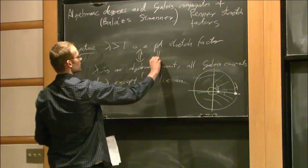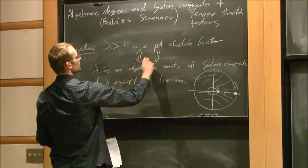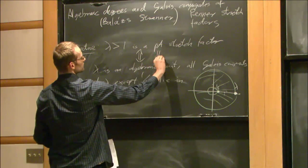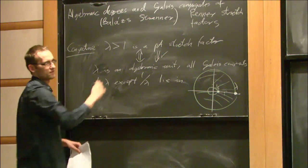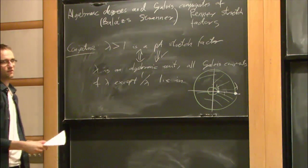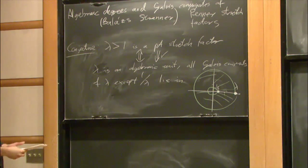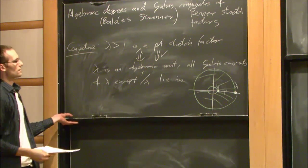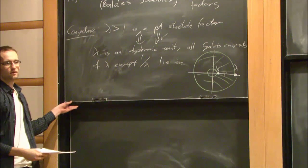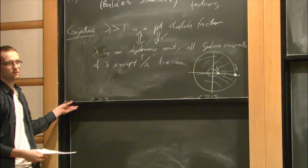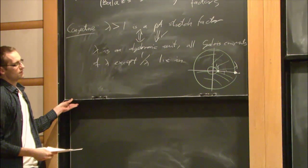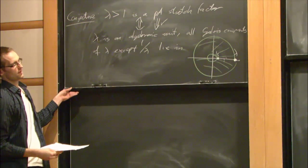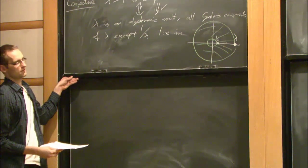One direction of this conjecture is known; the other direction is the hard one. It might not be the case that lambda is conjugate to 1/lambda, or conjugate to 1/lambda squared.